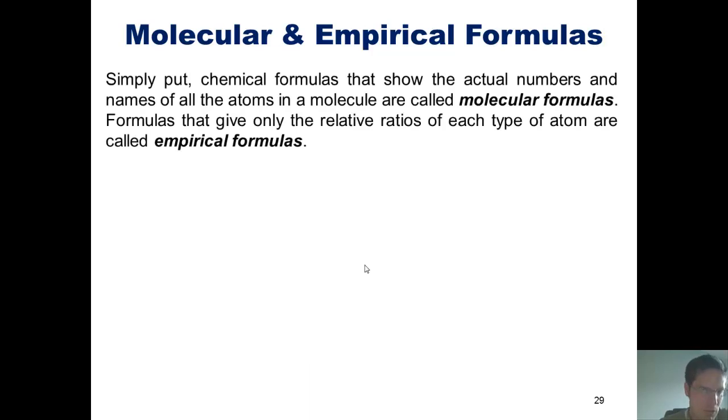Simply put, chemical formulas that show the actual numbers and names of all of the atoms in the actual molecule are called its molecular formula. Formulas that give only the relative ratios of each type of atom in the molecule are called its empirical formula.